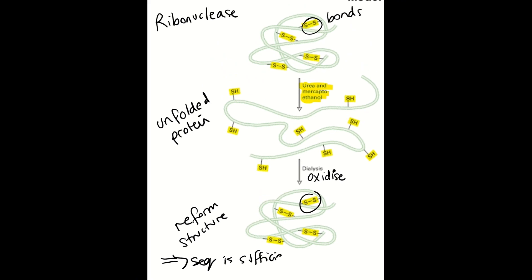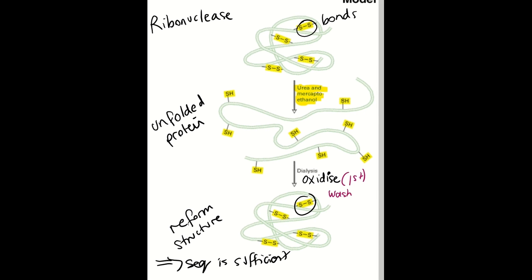However, if you change the order of events such that you re-oxidize the solution before urea is removed, then the protein incorrectly folds. However, this can be restored by adding a reducing agent that then enables the native structure of the protein to be formed, with the correct bonds forming between the amino acids.